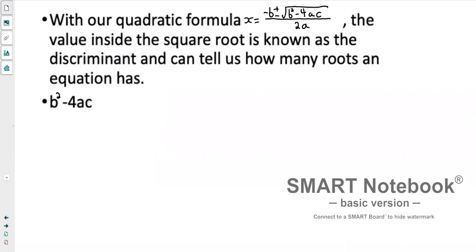With our quadratic formula x = (-b ± √(b² - 4ac))/2a, the value inside our square root is known as the discriminant. So b² - 4ac is our discriminant and can tell us how many roots an equation has.